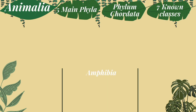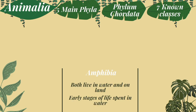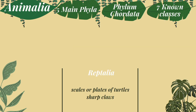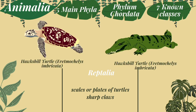The fourth class is Amphibia — species that live both in water and on land, and whose early stages of their life cycle are spent in water. An example of amphibians is a fanged frog. Next is class Reptilia. Class Reptilia have hard body coverings like scales or the plates of turtles, with sharp claws for climbing and tearing prey. Example species under class Reptilia are the Philippine crocodile and hawksbill turtle.